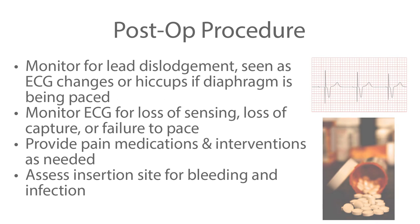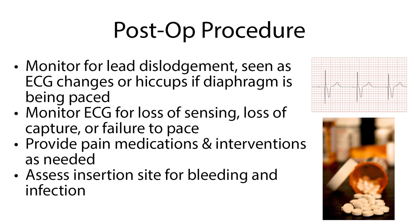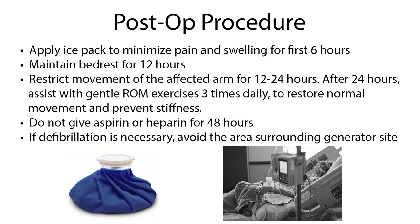Monitor for lead dislodgement seen as ECG changes or hiccups if the diaphragm is being paced. Monitor the ECG for loss of sensing, loss of capture, or failure to pace. Provide pain medications and interventions as needed, and assess the insertion site for bleeding and infection. Apply an ice pack to minimize pain and swelling for the first six hours. Maintain bed rest for 12 hours and restrict movement of the affected arm for 12 to 24 hours. After 24 hours, assist with gentle range of motion exercises three times daily to restore normal movement and prevent stiffness. Do not give aspirin or heparin for 48 hours. If defibrillation is necessary, avoid the area surrounding the generator site.